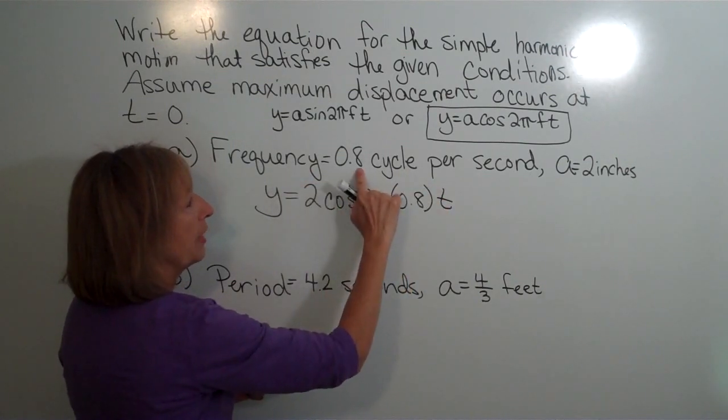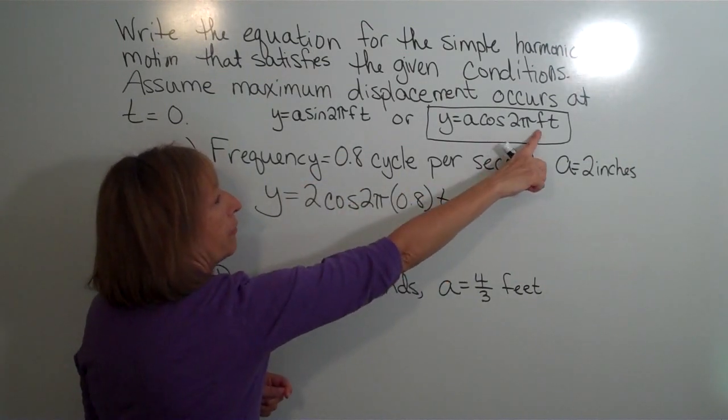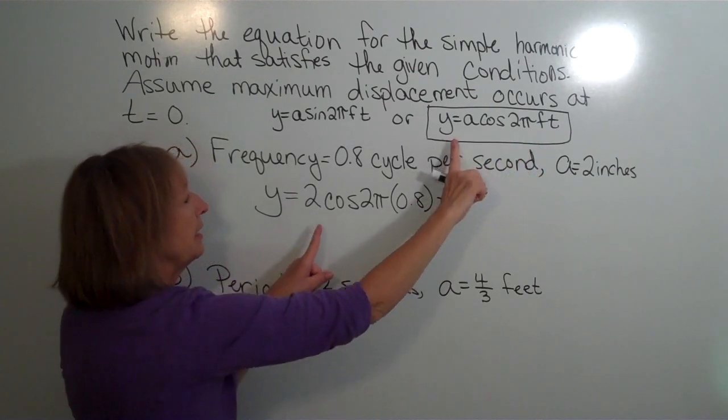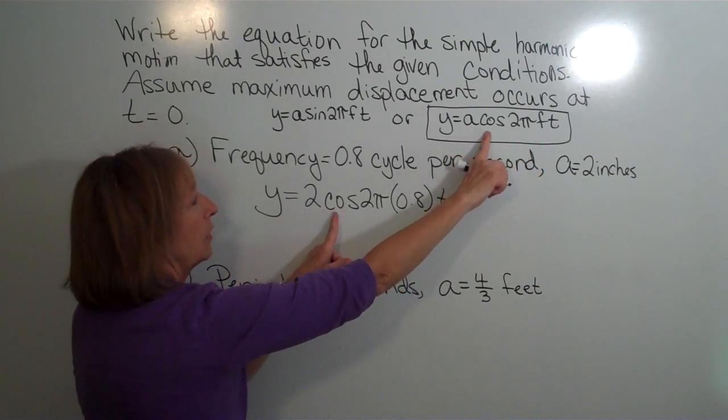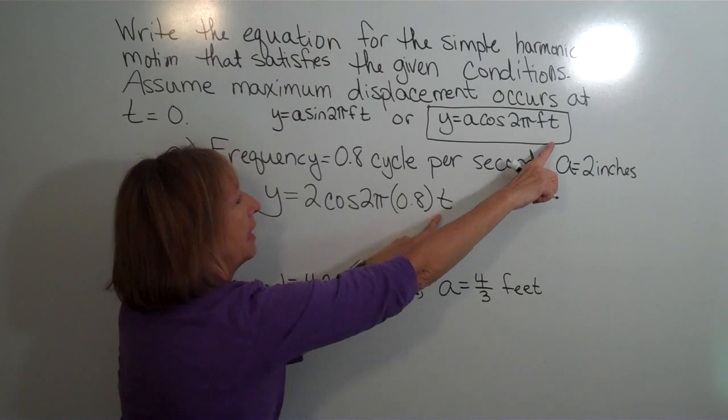So frequency is 0.8 cycles per second. f represents the frequency, so I have my maximum displacement cosine of 2π times f times t.